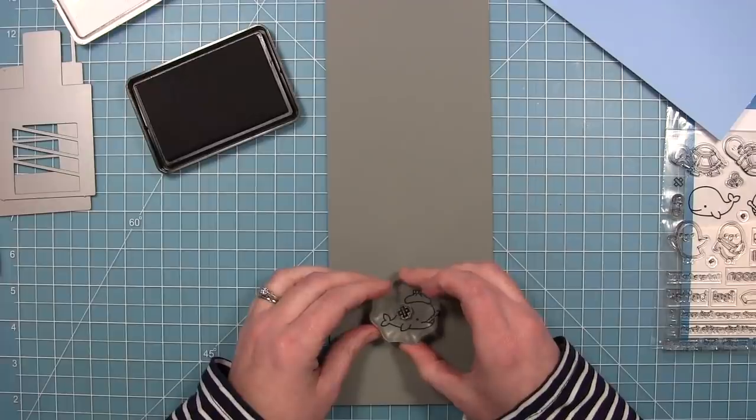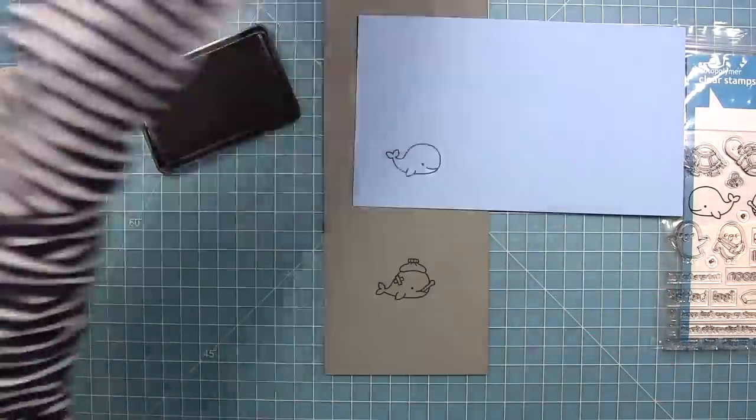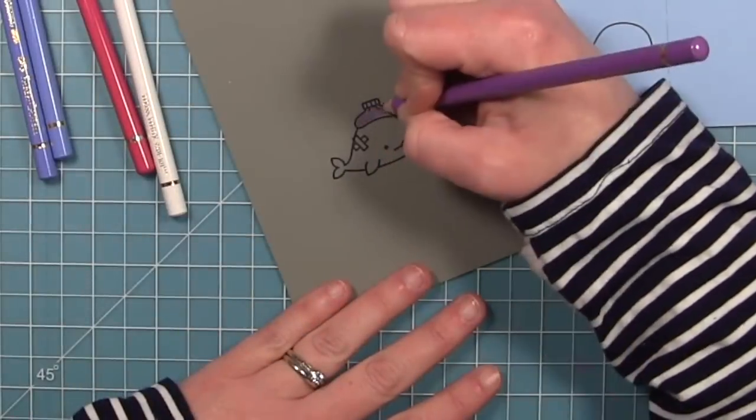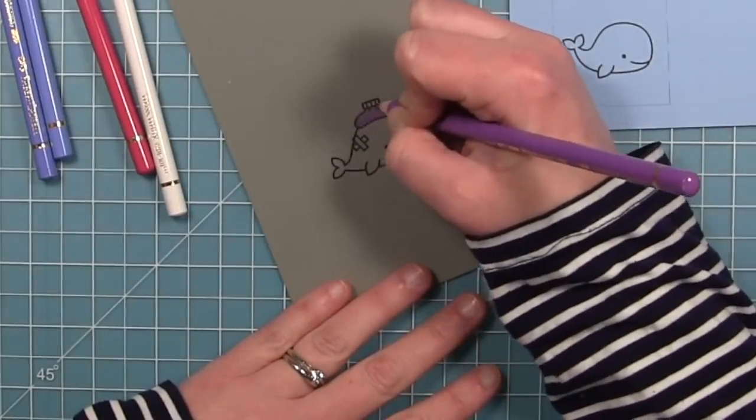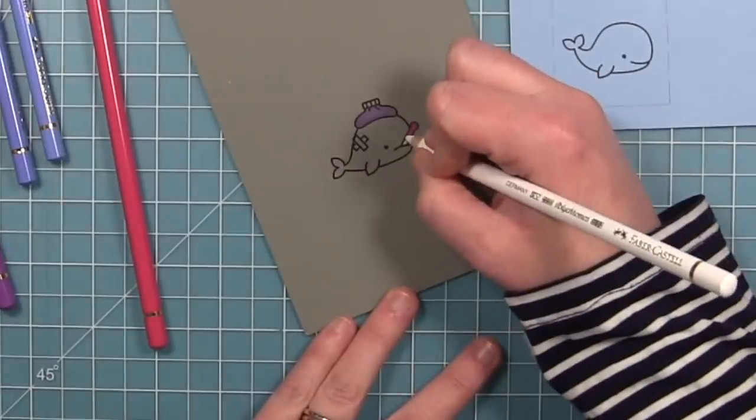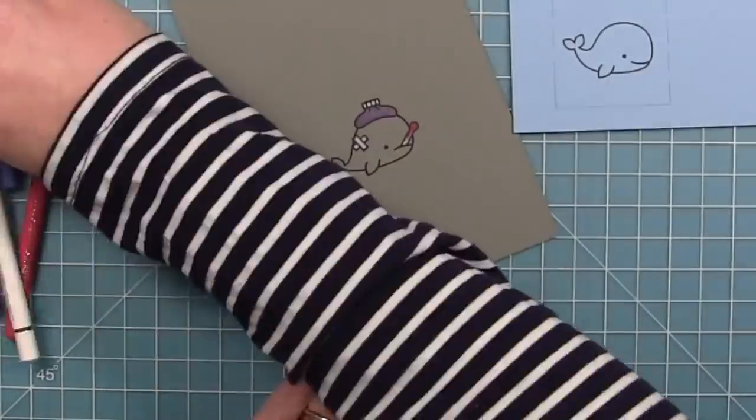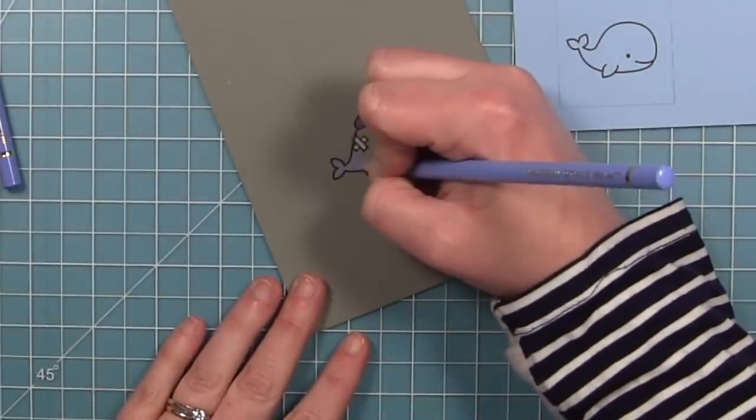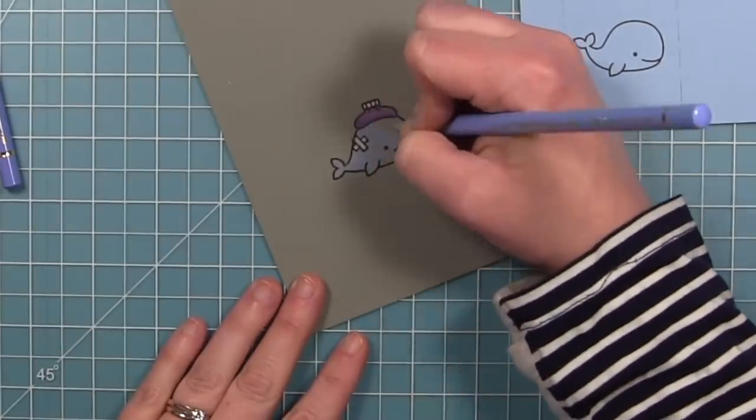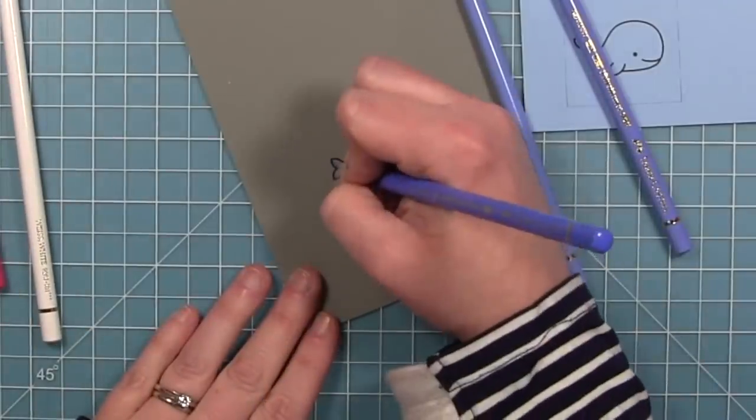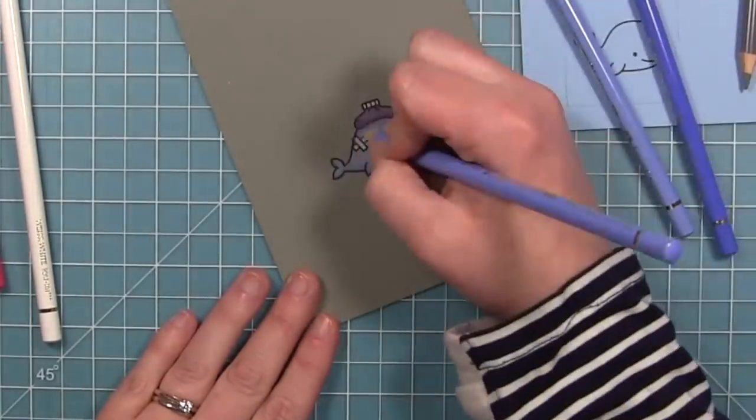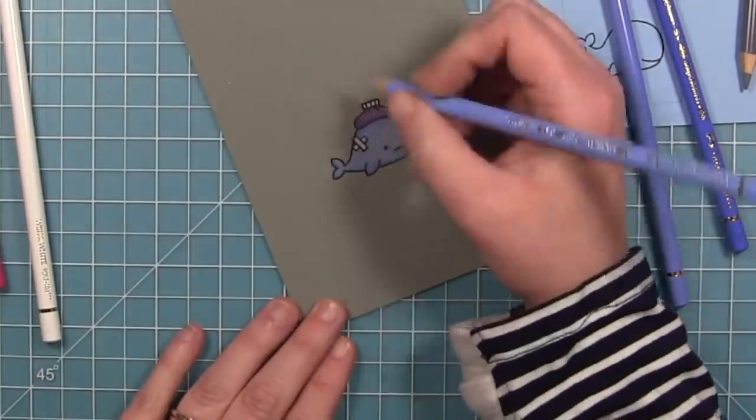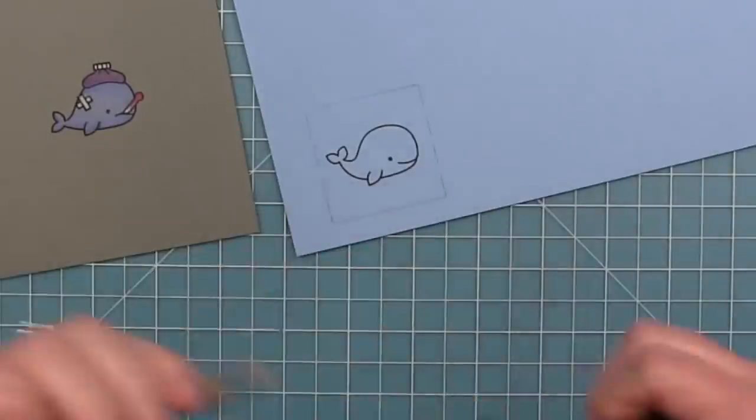I'm also going to stamp this little bandage on this little guy. I'm using my polychromo pencils and I'm just doing some very simple coloring. Got a little purple on that water bottle. I did some pink and some white on the thermometer. And then since he's on gray cardstock, I'm going to color him in blues. So I went in and kind of did a wash of all my light blue first, and then I'm going to go in with the darkers and do some shadows and then blend it out with the light, much like you do with your Copic markers.